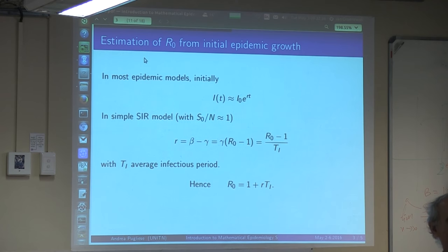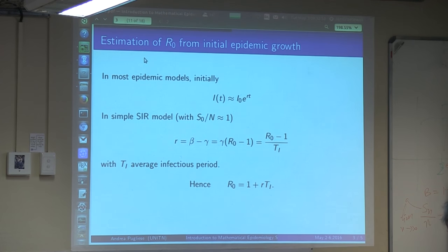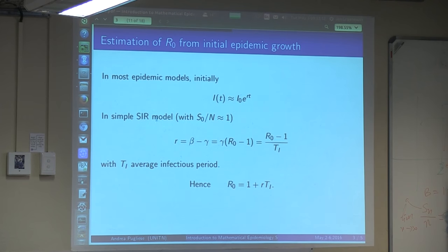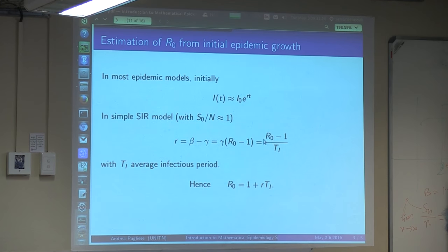How do we estimate R0 from initial epidemic growth? From what has been shown at the beginning on epidemics, you can assume that the initial value of infections will be small. Susceptibles will be many and will change more slowly. So initially in most epidemic models, the infectives will grow exponentially with some rate r. If in particular in the case of a simple SIR model, r can be written as beta minus gamma.